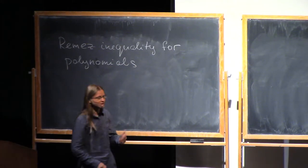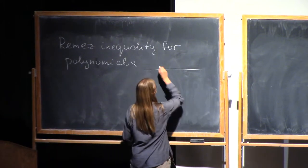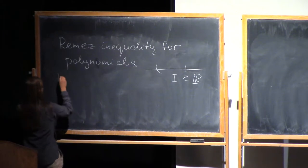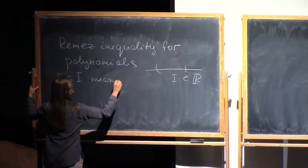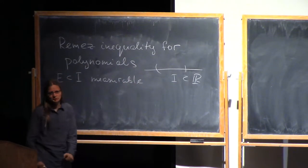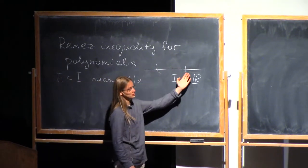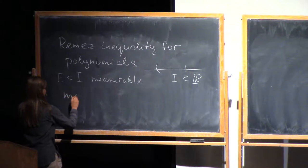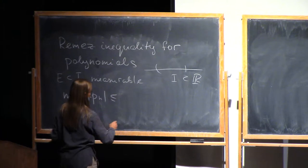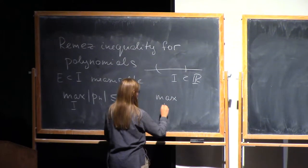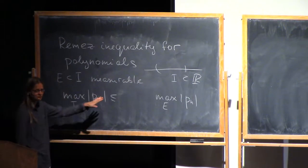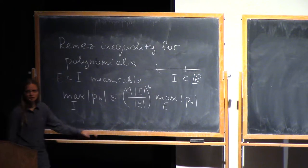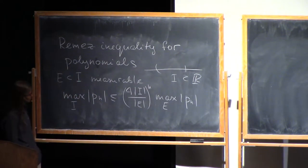Now I'm talking about polynomials on a real line. I have an interval I in R and a measurable subset of this interval. Then we claim that for any polynomial of degree N, you can estimate the norm of the polynomial on the interval if you know the norm on the set E. I'll write a simplified version here that gives a nice estimate, but to prove it in this form is not so easy.